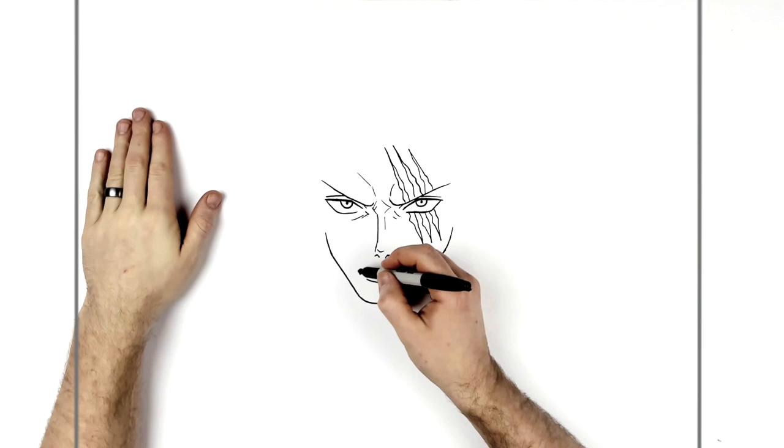He's got a bit of mustache and beard, and it's just sort of drawn in with these sorts of hair lines, like that. And the mustache comes around like so.